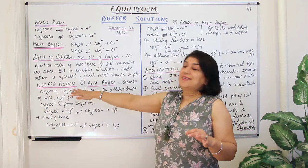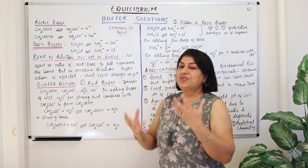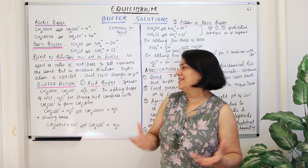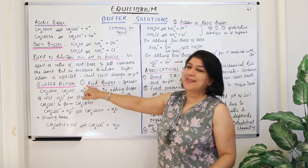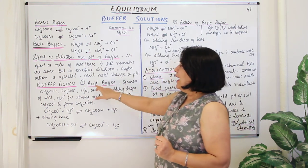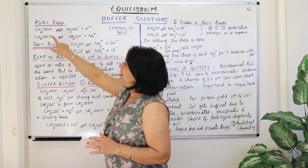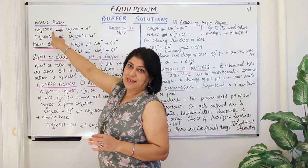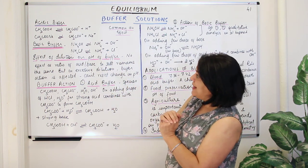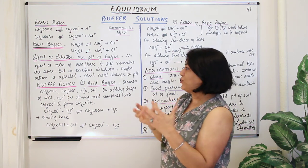Let us now understand what buffer action is — what reaction takes place that causes a buffer to act as a buffer. We will take two examples: the acid buffer (acetic acid and sodium acetate) and the base buffer. When you start with the acid buffer mixture, what species are present in the solution?